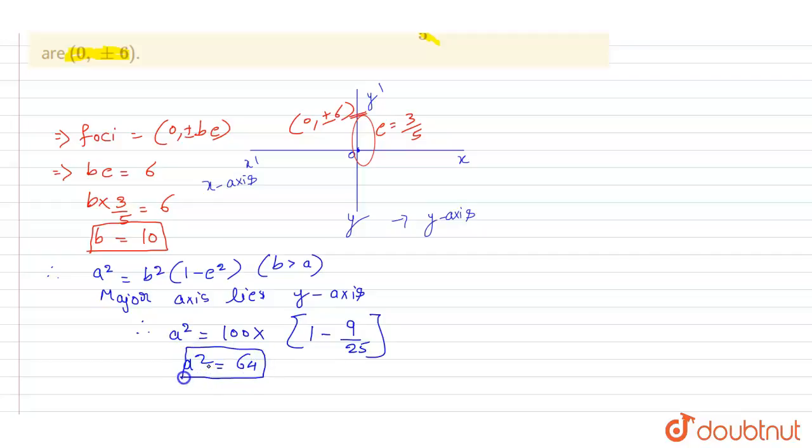So the a² value is 64. Here, b = 10, so b² = 100. Here, a² value is 64 and b² value is 100.